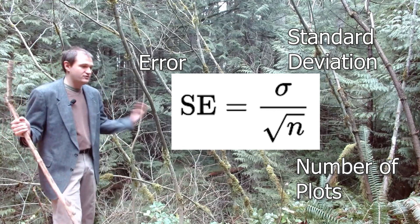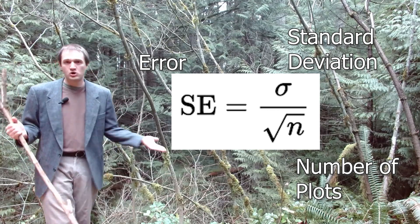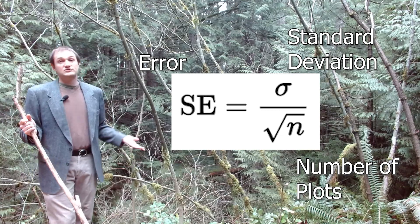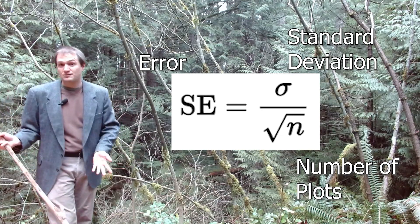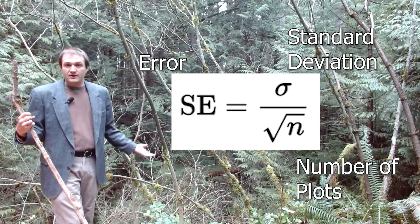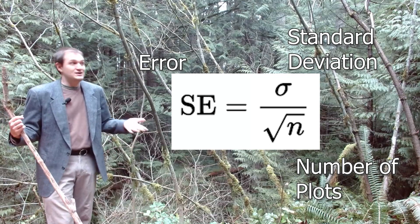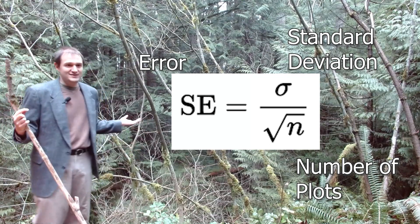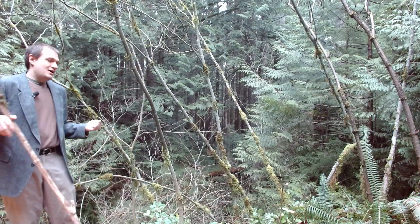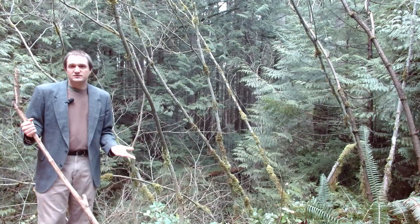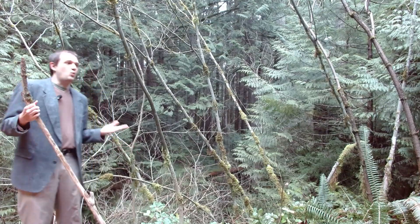We can compute confidence intervals from that by computing the amount of variation between plots and taking into account the number of plots that we've measured. For example, if we've measured more of the area, then our uncertainty goes down. In fact, if we measure all of the area, we have an uncertainty of zero, because we've measured every tree. This is called a census. So that's how traditional forest inventories work.